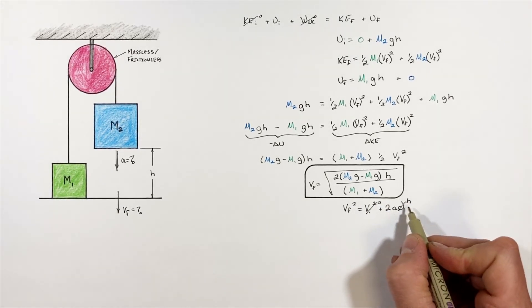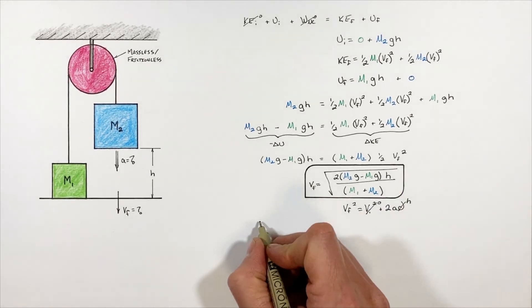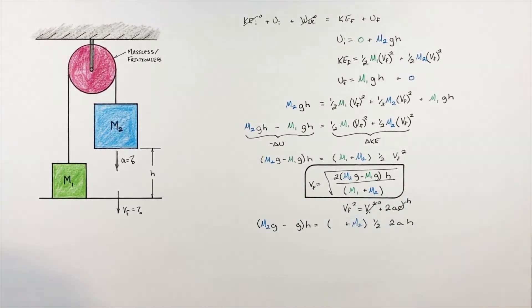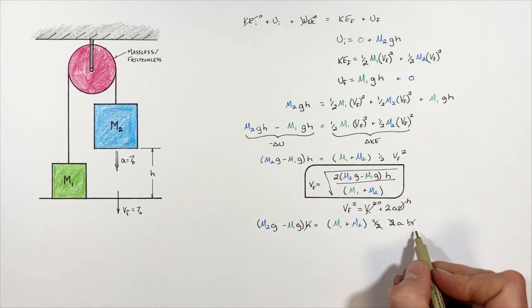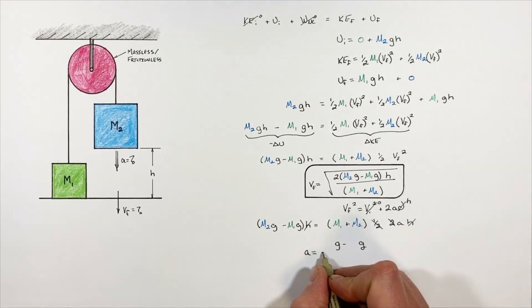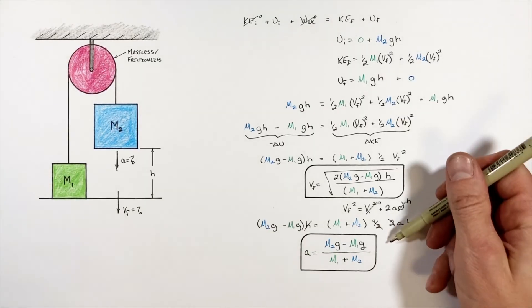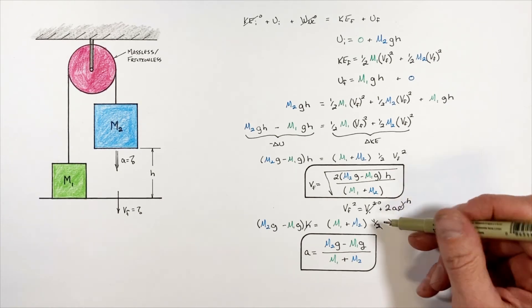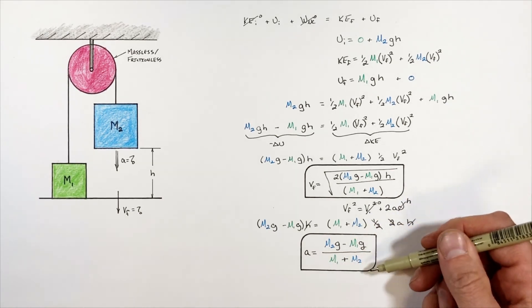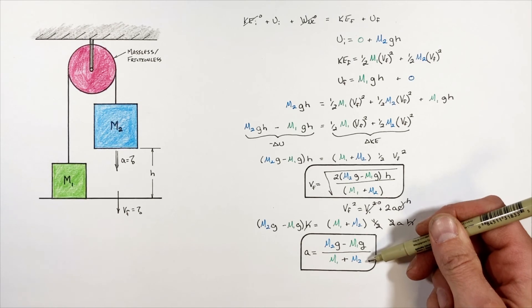So subbing in this term 2ah here we'll get this. And at this point this is just a canceled party. So rearranging this for a we'll get this. And realize this expression is really nothing other than Newton's second law. We have a net force in the numerator divided by the total mass in the denominator.